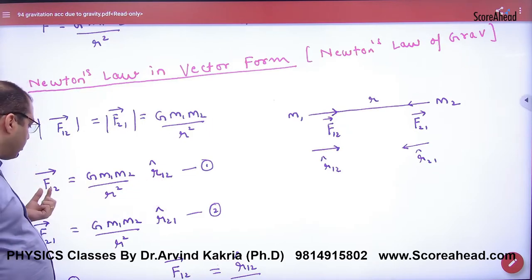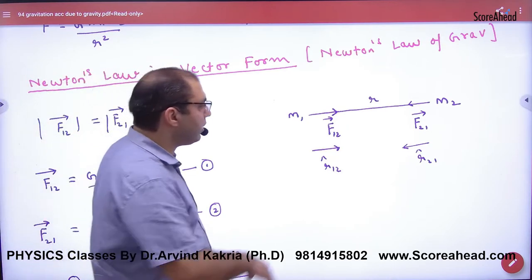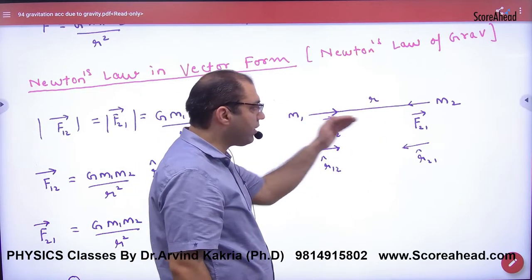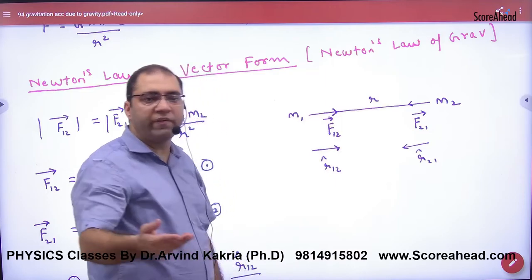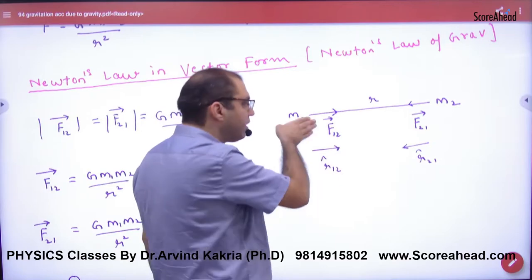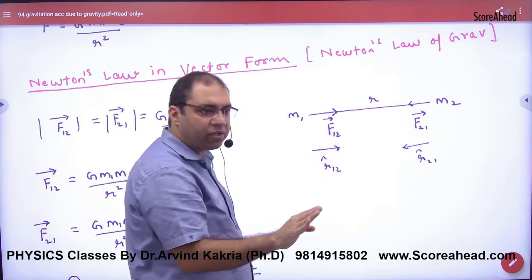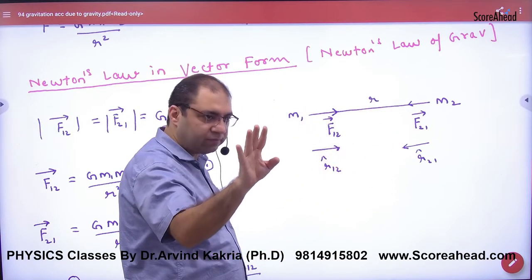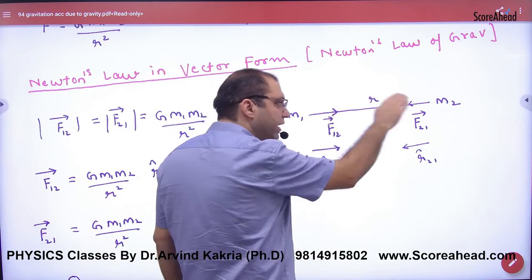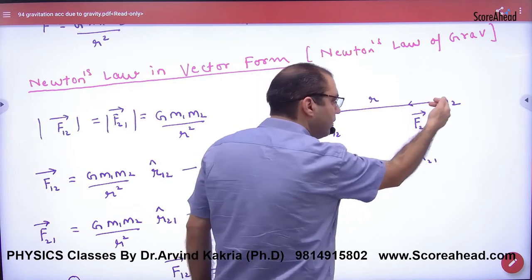What about the direction? The unit vectors are i cap, j cap, k cap. F12 cap means the unit vector from 1 to 2. It has magnitude 1. F12 means the direction from 1 to 2, and F21 means the direction from 2 to 1.